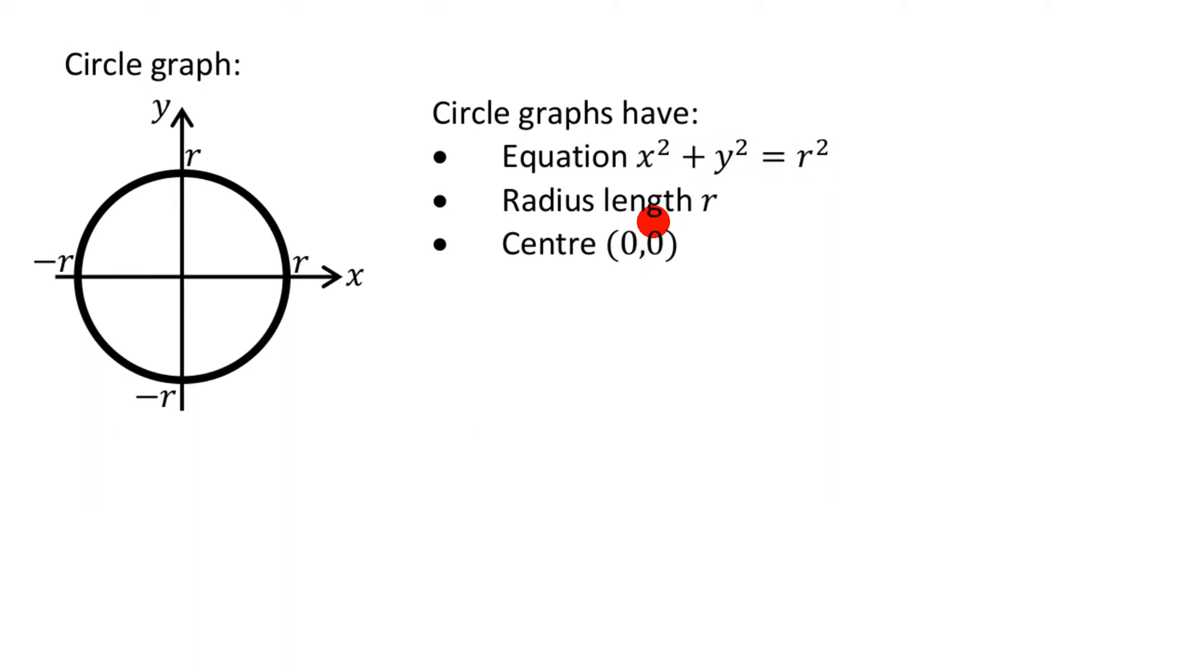What this graph is saying is that if, for a fixed number like r, so say r was 5, and r is not a letter chosen at random, it means radius. So if the radius is 5, that means, if the radius of this circle is 5, that means the equation of this graph would be x squared plus y squared equals 5 squared, or literally it would be 25.